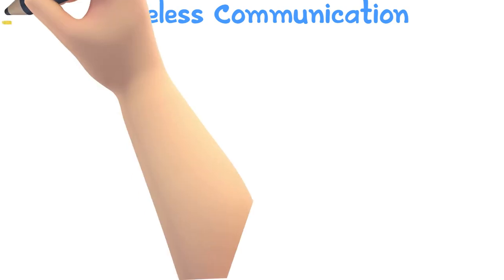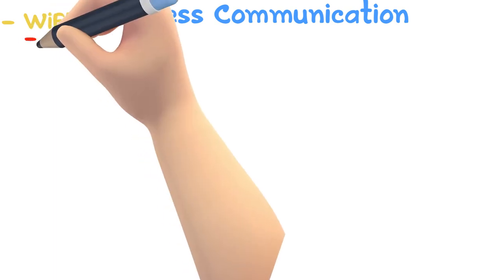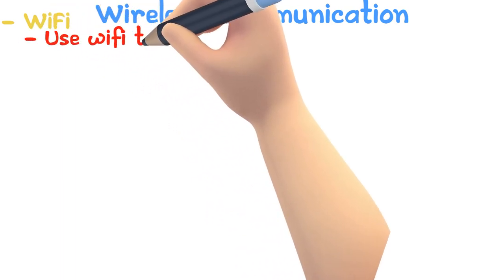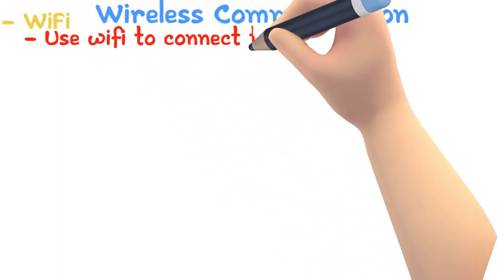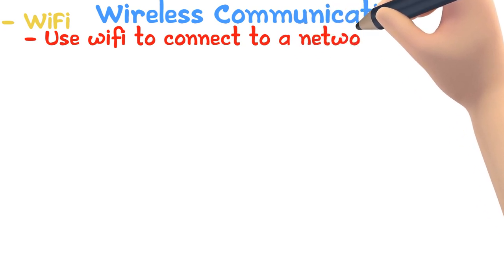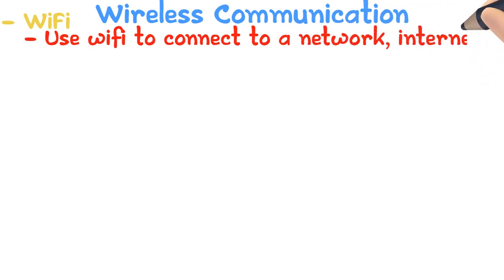There are many different types of wireless communications. Let's take a look at some of them. Wi-Fi is found almost everywhere these days. You can use Wi-Fi to connect to a network, which is most probably connected to the internet.